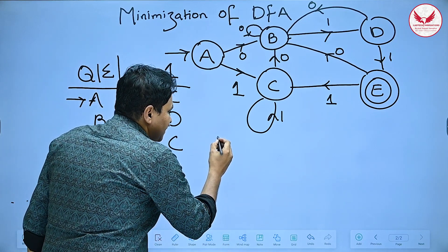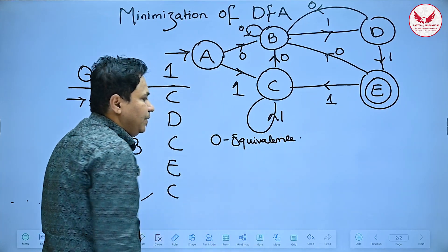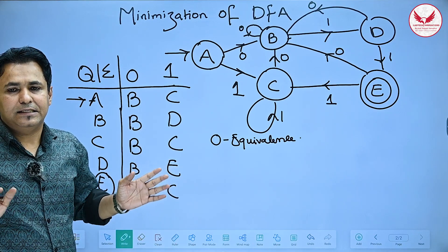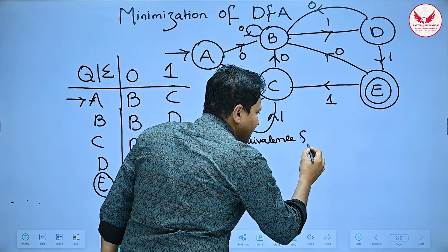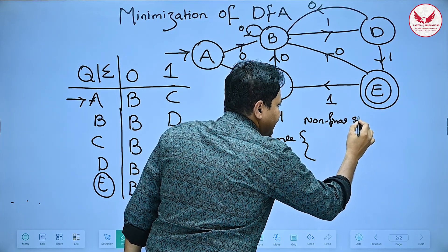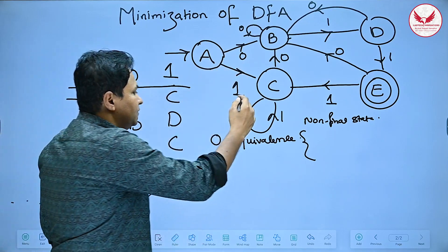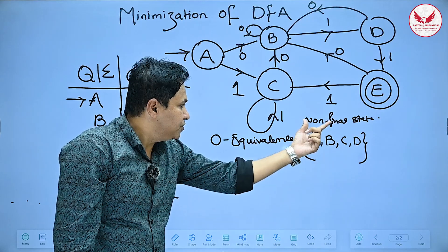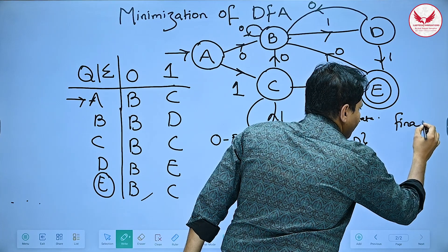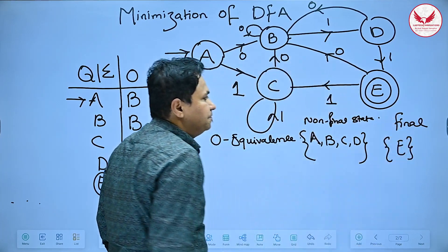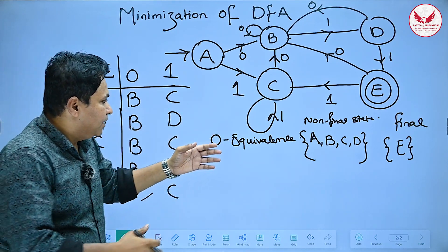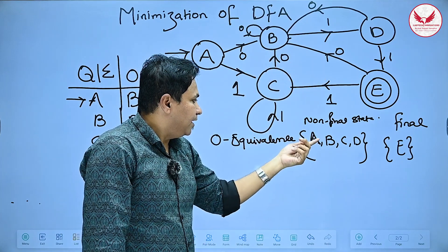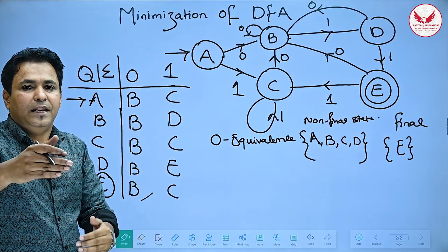The first step of minimization is zero equivalence. Zero equivalence means we bifurcate non-final states and final states into separate categories. The non-final states are A, B, C, D, and the final state set contains only E. So we define one set for non-final states {A, B, C, D} and one set for the final state {E}.